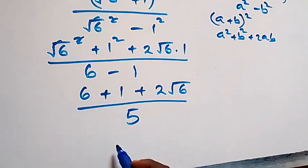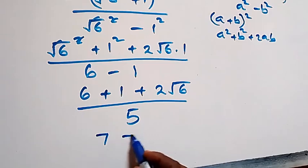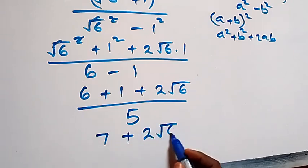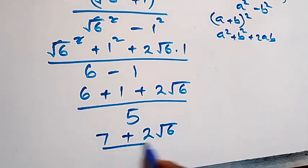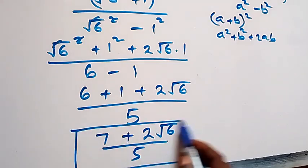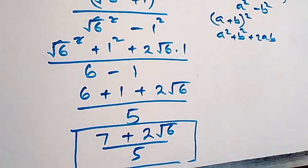So the numerator is 6 plus 1, which is 7, plus 2 root six. The solution from the first method is (7 plus 2 root six) over 5.